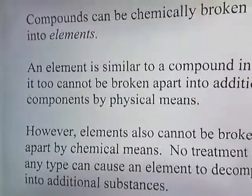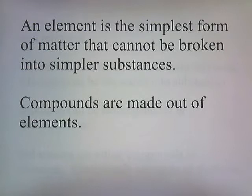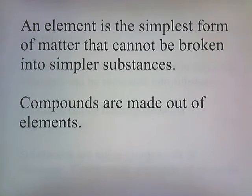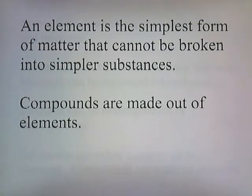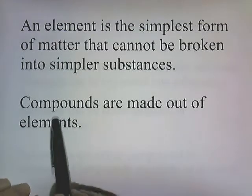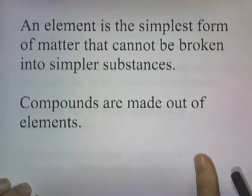An element is the simplest form of matter that cannot be broken into simpler substances — we can't heat it, boil it, filter it, or pass electricity through it; we can't do anything to make it fall apart. Compounds are made out of elements: when you take elements and put them together, you form compounds, and you can't break compounds apart unless you use chemical methods to separate them into elements.